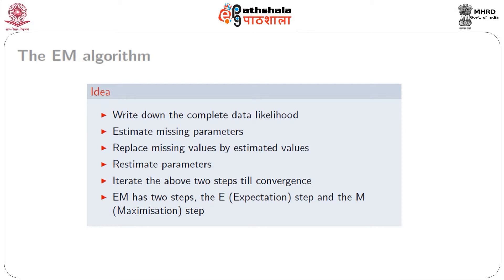The idea is to write the complete data likelihood and then estimate the missing parameters, then again use the missing parameters and re-estimate — write the complete data likelihood and re-estimate the missing values. And this goes on. Basically, EM is an iterative method and the iteration goes on until convergence. The EM algorithm consists of the E step and the M step: the E step is the expectation step and the M step is the maximization step.